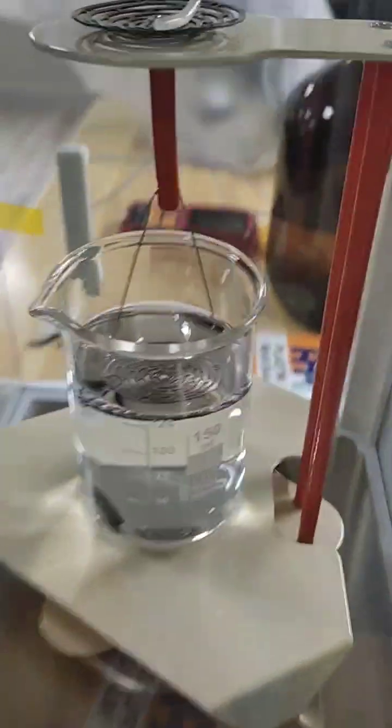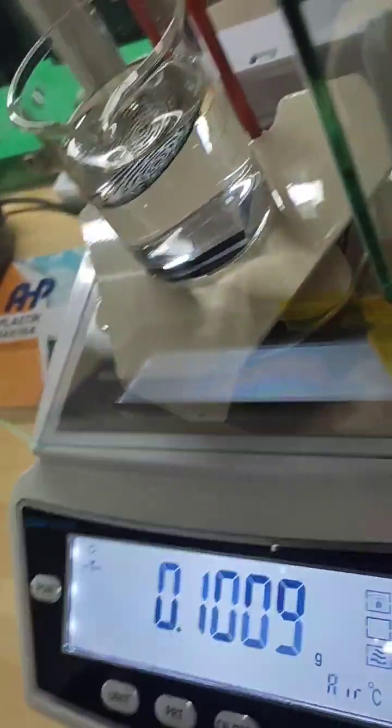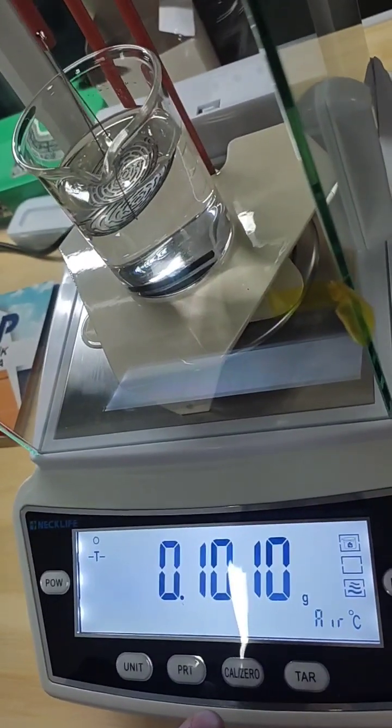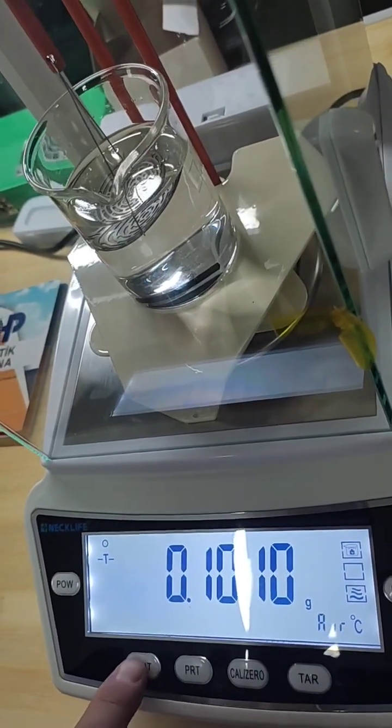Then place the sample weighted in air. Wait for the digit to be stabilized. Then click on unit.